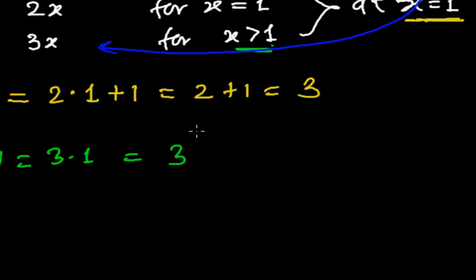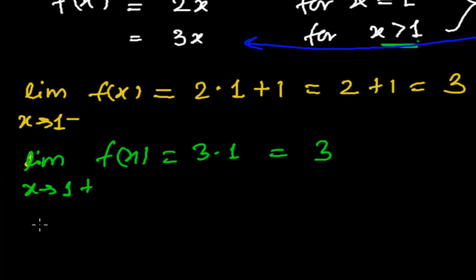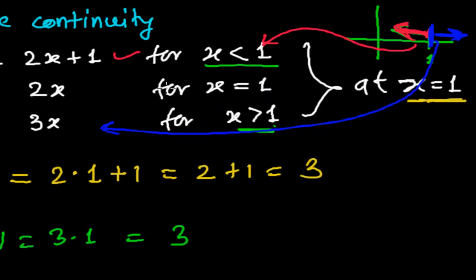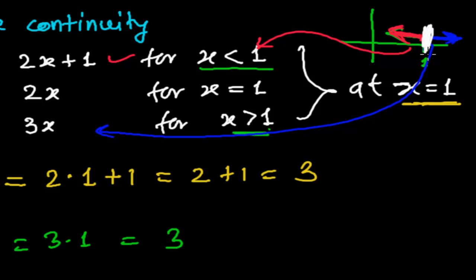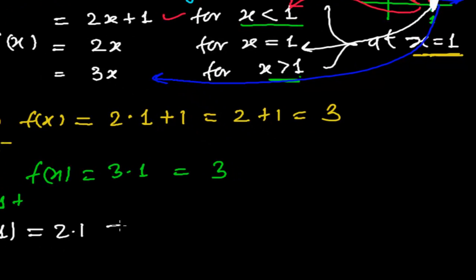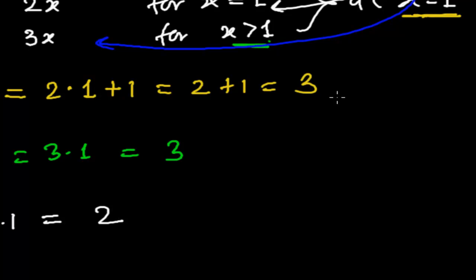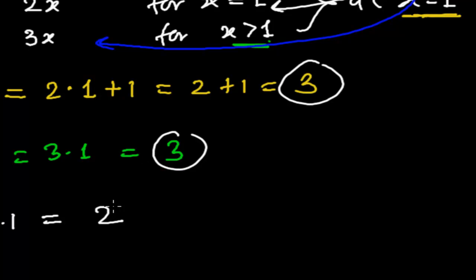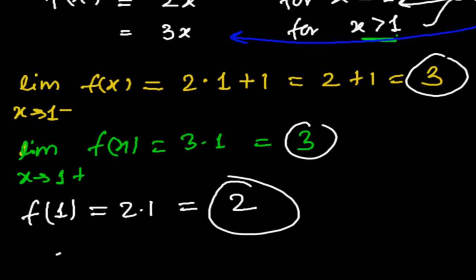Now we need to find the value of the function at x equals 1. So f(1): when x is exactly 1, we use the piece 2x, giving 2 times 1 equals 2. Oh — we get a different value! The left hand limit is 3, the right hand limit is 3, but the value of the function is 2.